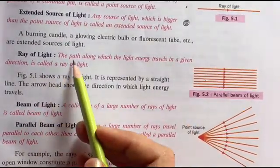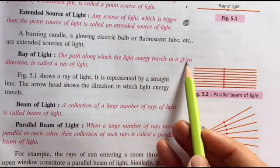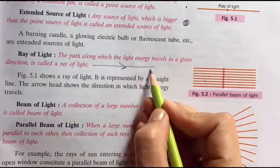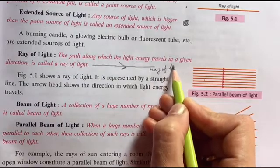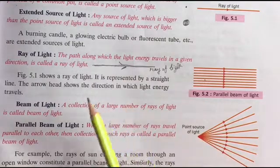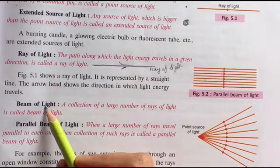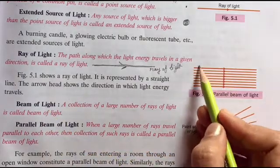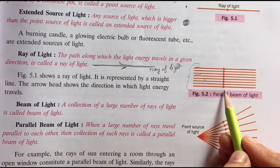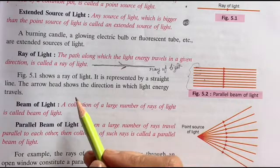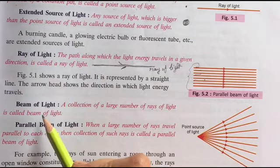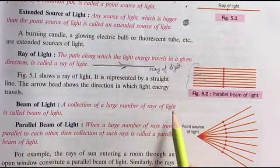Next thing is ray of light. The path along which the light energy travels in a given direction - if this is the path which it is following, this is called ray of light. So the path which any light ray follows is called ray of light. Then comes beam. Beam means group of rays. Look at this figure - one ray, two, three, four - many rays traveling together. That means a group of rays which are traveling together is called beam of light. A collection of large number of rays is called beam of light.